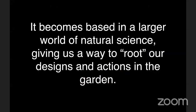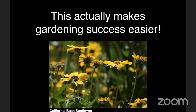It's a lot about process. We have moments of incredible photographic beauty in different sections most of the year, but it doesn't need to be that all the time everywhere. Thinking about this more as a process and as a living system, our gardening and our garden design become based in a larger world of natural science, giving us a way to root our designs and actions in the garden. That makes gardening success easier — it's not just about why a plant stopped blooming, but about being part of this dynamic ecosystem. Even if a plant dies, that's just part of the process.